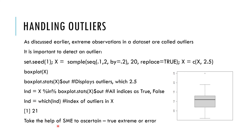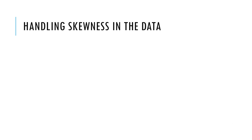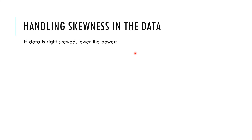Once you identify an outlier, you need to discuss it with the domain expert or subject matter expert to determine whether it is an extreme but valid value or simply an error. That decision should be based on domain knowledge.